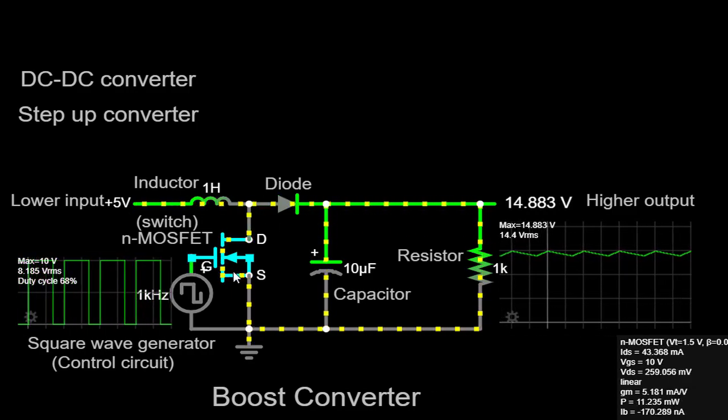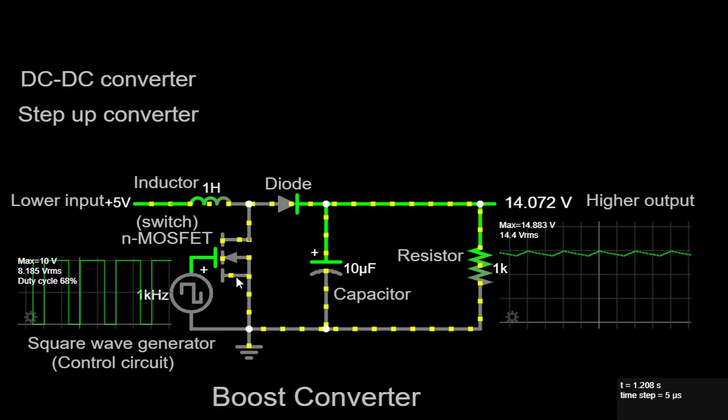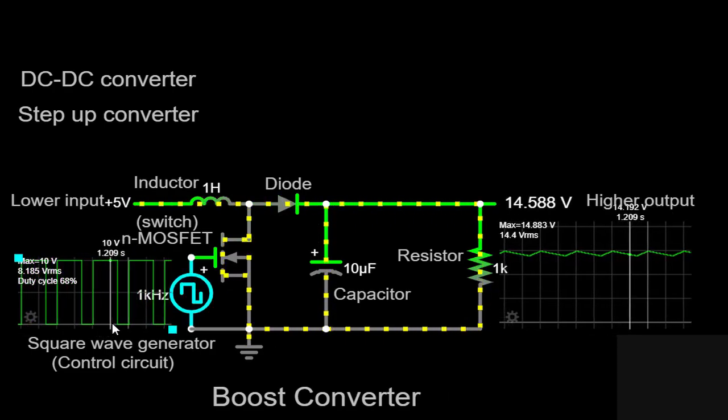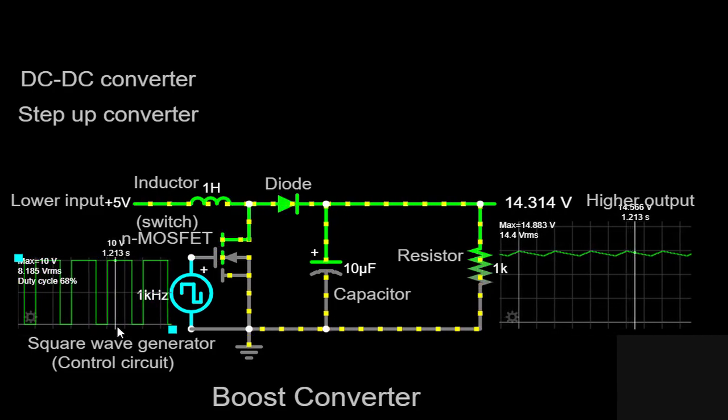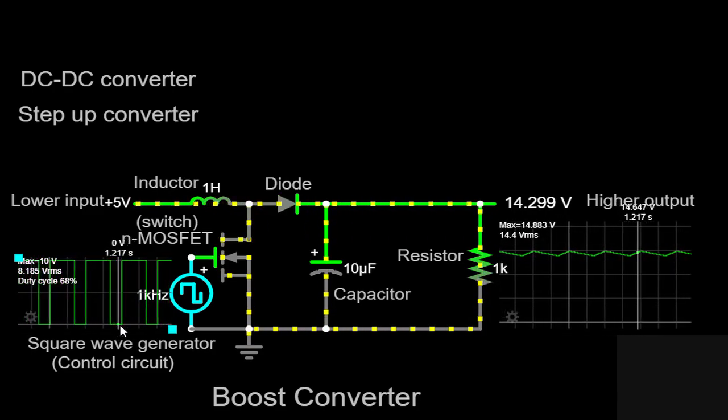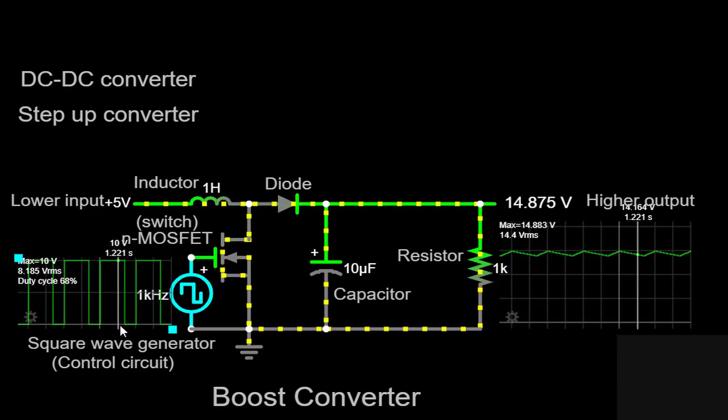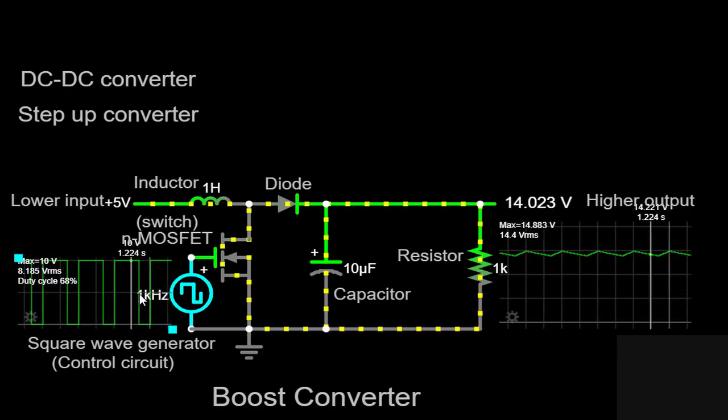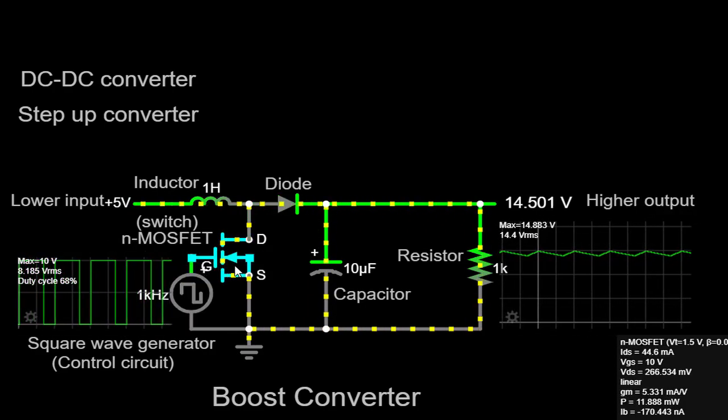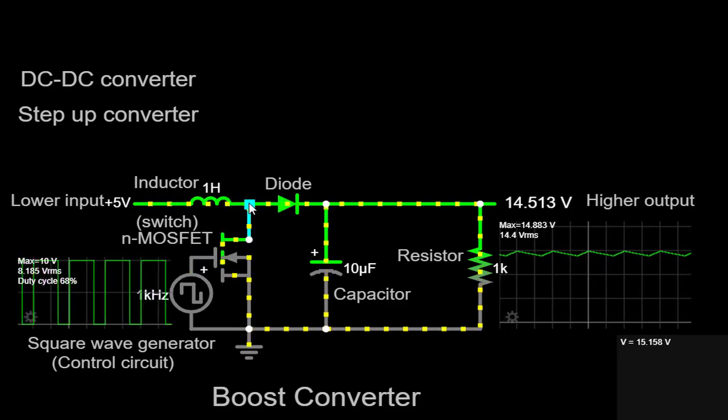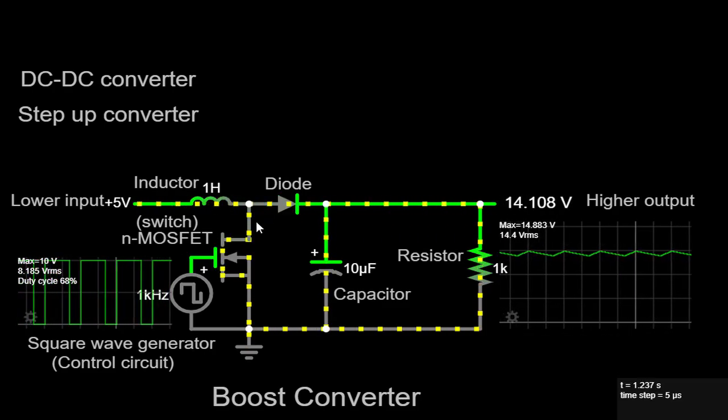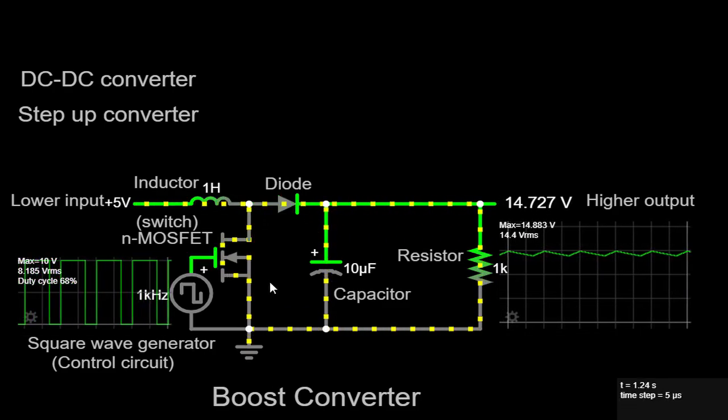When the square wave generator switches to a low voltage, the MOSFET turns off, interrupting the current flow through the inductor. As a result, the inductor releases the stored energy in the form of a voltage spike. This voltage spike gets added to the input voltage, effectively stepping it up. This process takes place during the off or discharging phase.